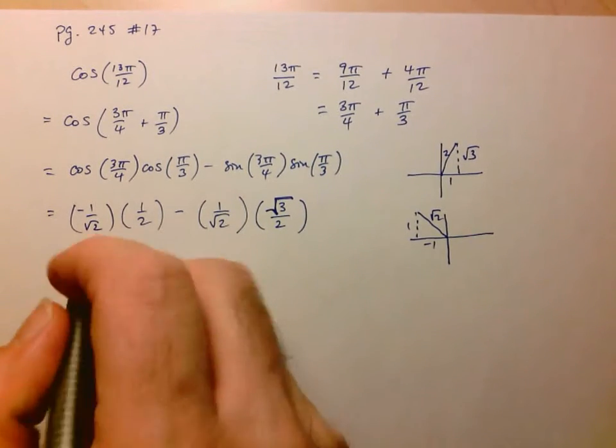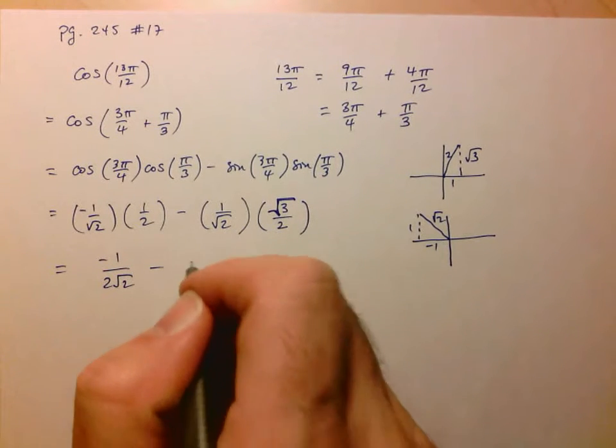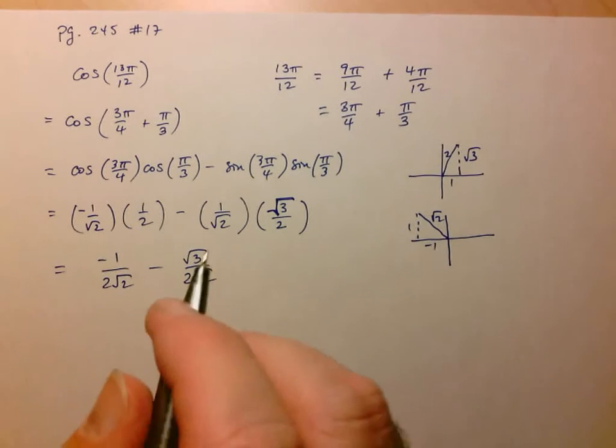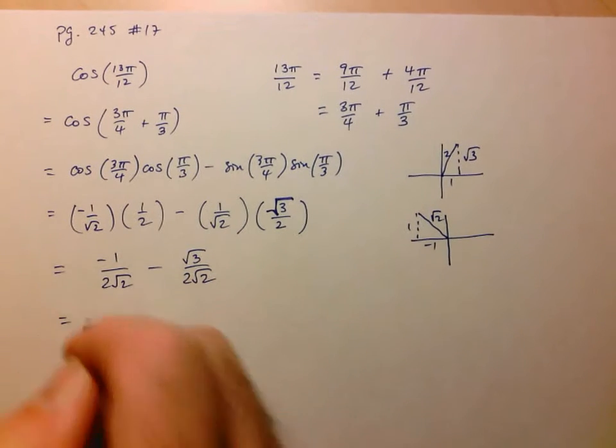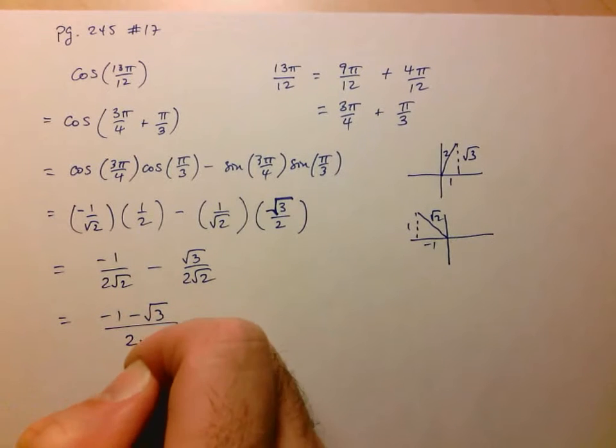And now I'm just going to simplify. So this is going to be negative 1 over 2 root 2. And this is going to be minus root 3 over 2 root 2. And so this is going to be negative 1 minus root 3 over 2 root 2.